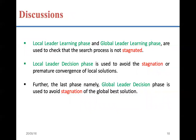Another advantage: in PSO, if a solution gets stuck at a local optimum, there is no built-in mechanism to escape it. But in SMO, the local leader learning phase and global leader learning phase first check whether there is any stagnation. If there is stagnation, the decision phases are used to avoid it. If the local leader is stuck, it updates its position with the help of the global leader as well as a randomly selected member from the entire population.